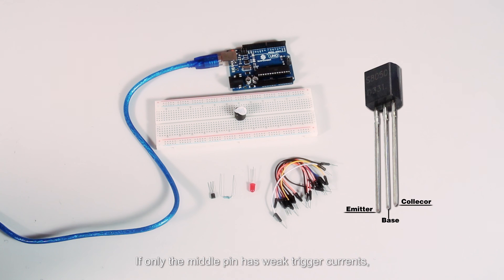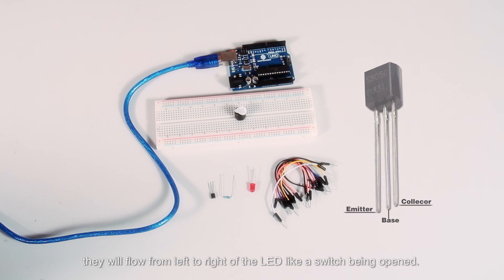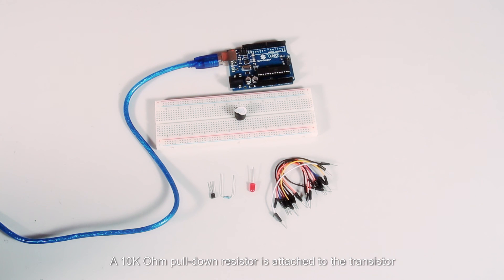If only the middle pin has weak currents, they will flow from left to right of the LED like a switch being opened. A 10K ohm pulldown resistor is attached to the transistor output stage in order to avoid analog port suspending to interfere with signals and cause misjudgment.